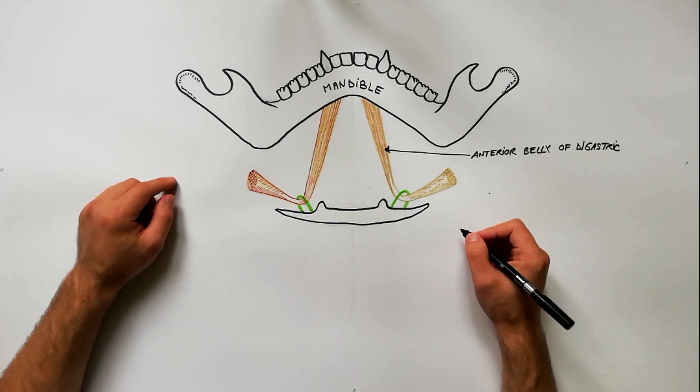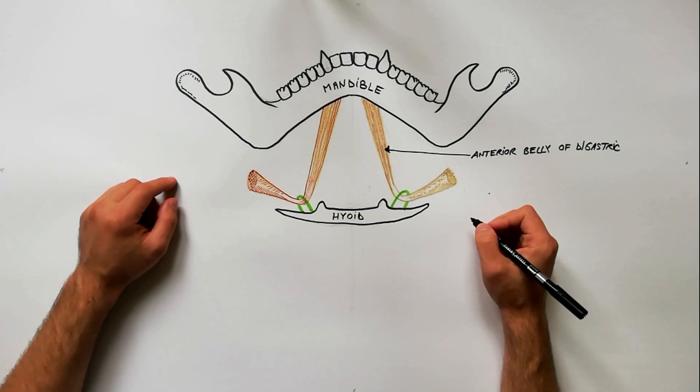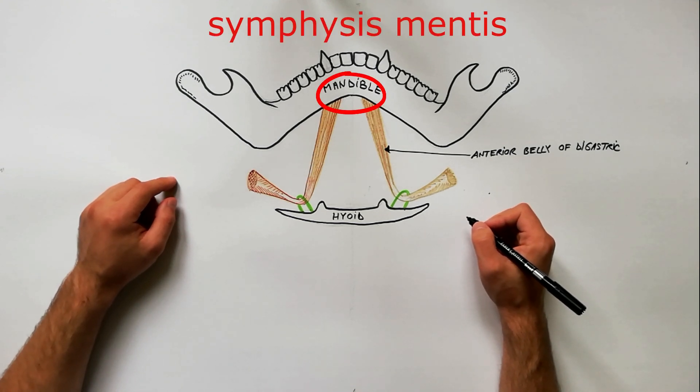Its base is represented by the body of hyoid bone and its apex is the symphysis mentis.